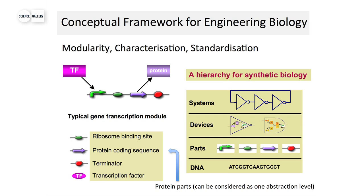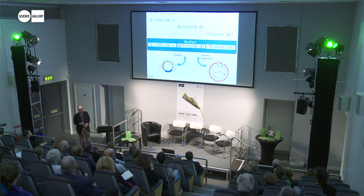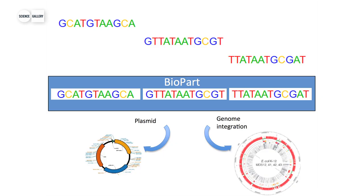This leads to a parts registry — around the world you can access them online. You'll find a massive resource of biological parts, particularly on the registry of standard biological parts, which is more of a student registry, but there are also more professional registries. We're considering the cell essentially as a mini manufacturing unit — engineering these cells in a predictable and robust way to produce chemicals, biomaterials, biofuels, pharmaceuticals, and other applications.